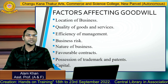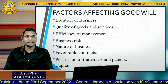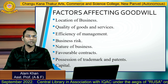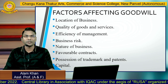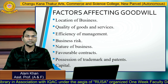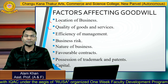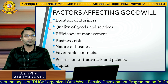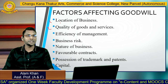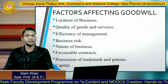Now we will discuss the factors which affect goodwill. The first factor is location of business — every business must have a good location, such as a market location, to earn better goodwill in the minds of stakeholders. Second is quality of goods and services — a company must produce quality goods and provide quality services. Third is efficiency of management, which also depends on management efficiency.